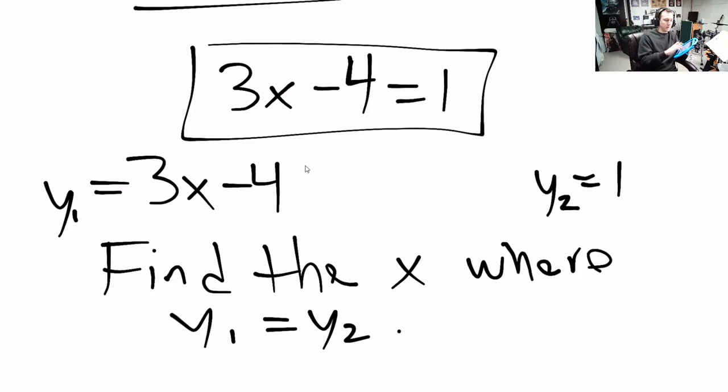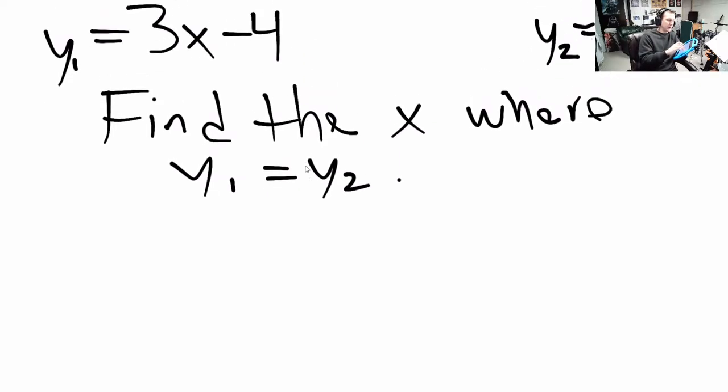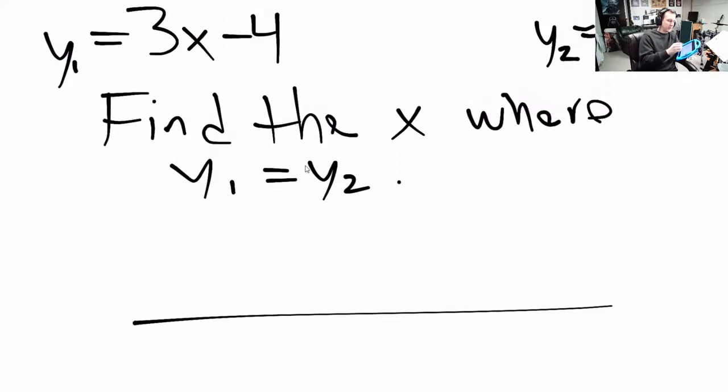What I'm going to tell you now is you can graph the left side of an equation and you can graph the right side of an equation, and you'll see graphically the result. So here we go, I'm going to graph both of these things. The first one, y₁, is 3x minus 4. It looks like this: 1, 2, 3, 4, slope of 3.